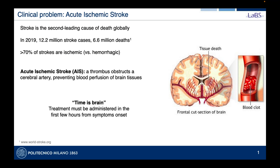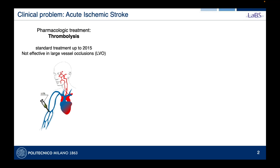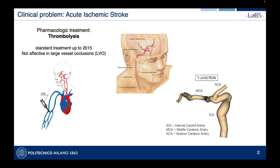The key concept for treating acute ischemic stroke is that time is brain — treatment must be administered within the first few hours of symptom onset. Until around 2015, the almost only available treatment was a pharmacologic one called thrombolysis: the injection of a drug to try to dissolve the thrombus. However, this treatment proved ineffective for large vessel occlusions, including the intracranial carotid and its ramifications into the middle and anterior cerebral arteries forming the so-called T-junction.